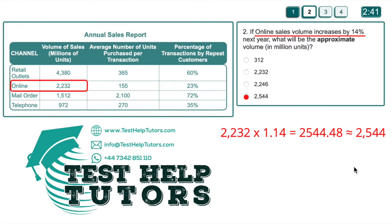I hope you've had a go. If online sales volume increases by 14% next year, what will be the approximate volume in million units? The online sales volume is 2232. If this increases by 14%, all we have to do is multiply this figure, 2232, by 1.14.